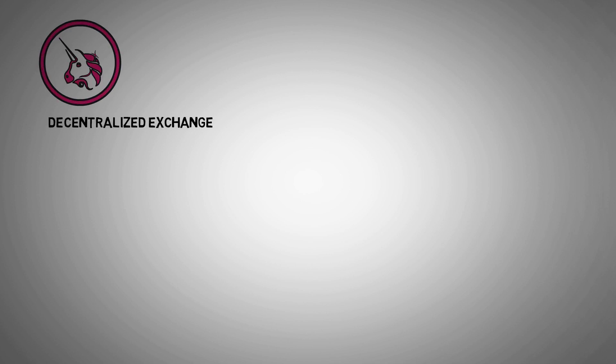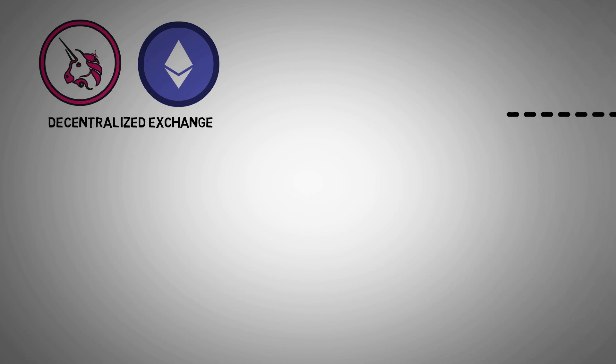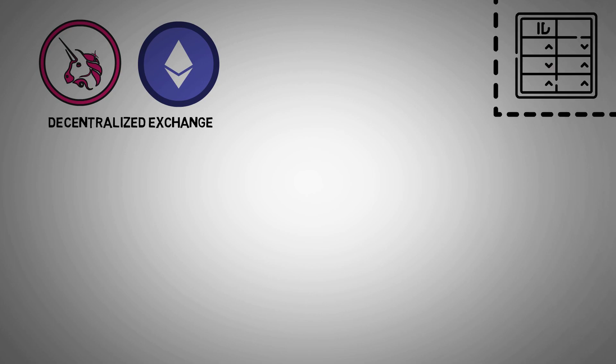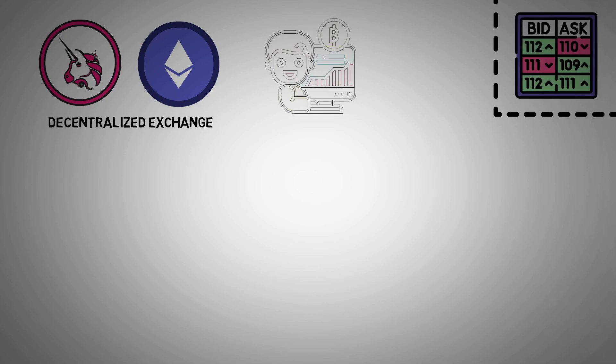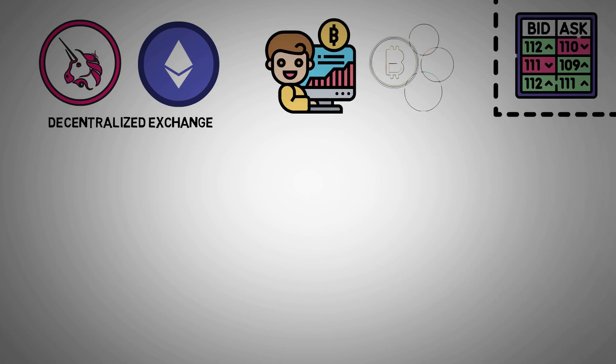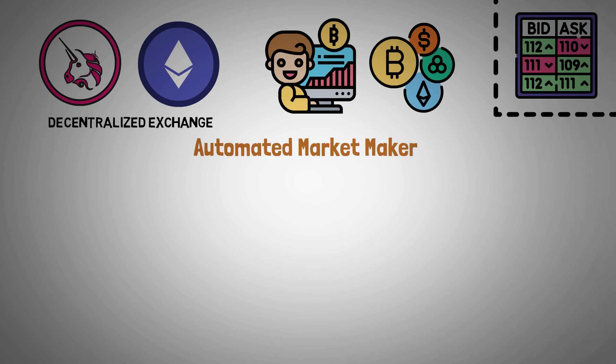Uniswap is a decentralized exchange that uses the Ethereum blockchain. Instead of using conventional order books, it enables users to trade a variety of digital assets using an automated market maker model.